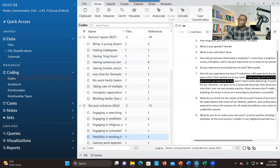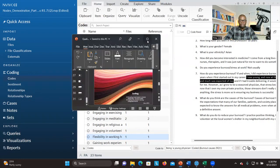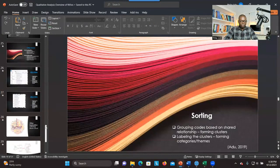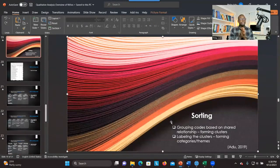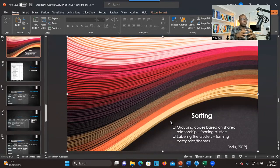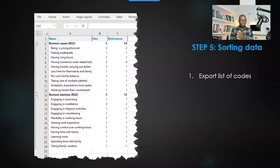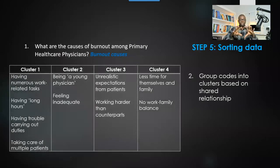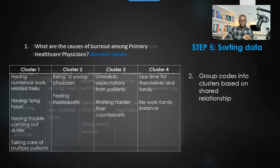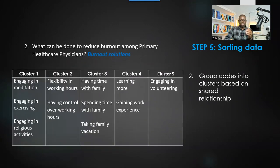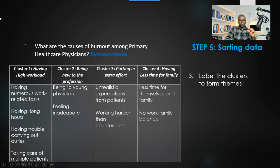I'm going to show you how to do it. But first, a recap: sorting is all about grouping codes based on their relationship. You examine each code and find commonalities to see whether you can group them into categories. We're going to export all the codes from NVivo to an Excel spreadsheet, create a table, and categorize the codes into various classes — doing that for each research question and labeling the classes based on the content.